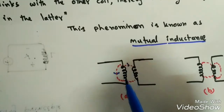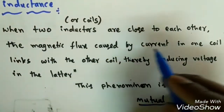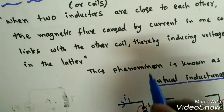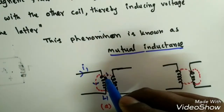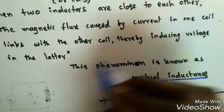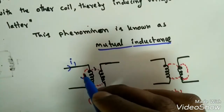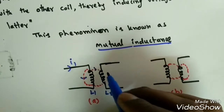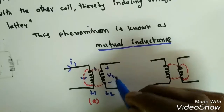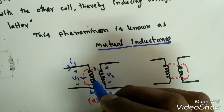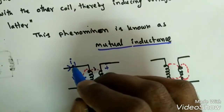Mutual inductance is straightforward: if two coils L1 and L2 are brought together, the magnetic flux caused by current i1 in coil L1 will also link with the adjacent coil L2, thereby inducing a voltage in it. This is because the time-varying current in one coil generates flux in the other.